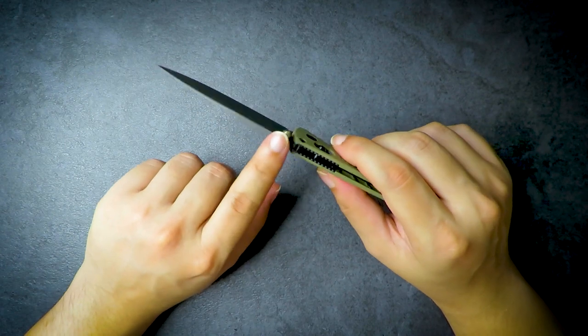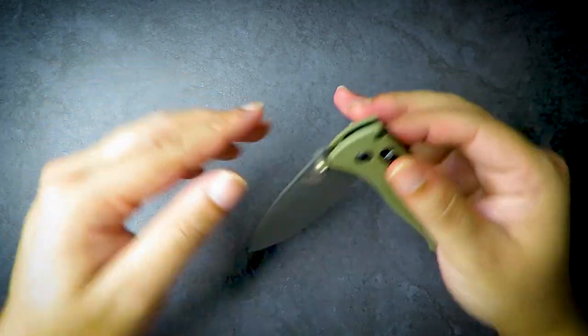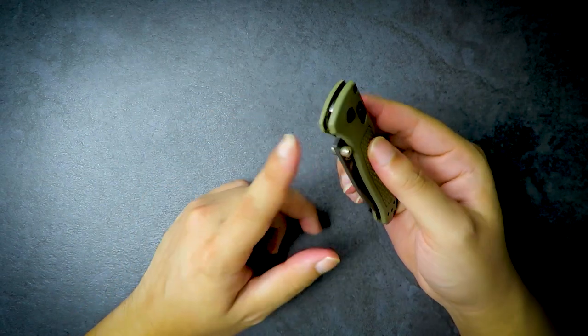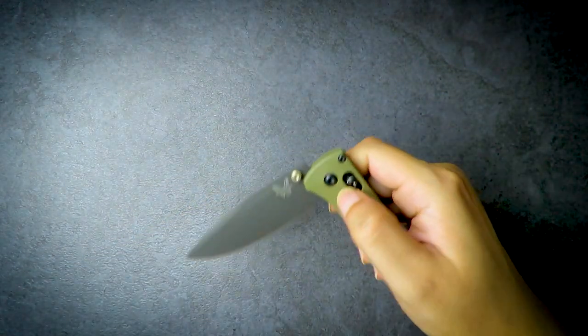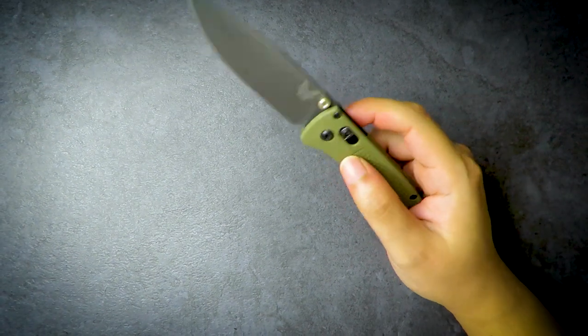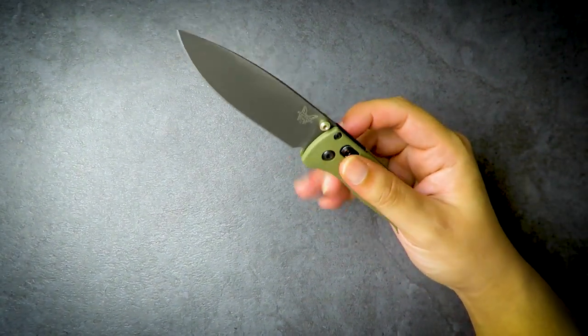From my understanding, it's because the Axis Lock bar is titanium and it's running on steel, causing lock stick. I've never had lock stick issue on my Ganzo because the lock bar is steel on steel. I will do a video comparing Benchmade Axis Lock with Ganzo G-Lock because they're technologically the same since the patent expired.